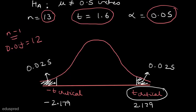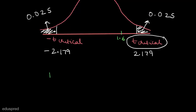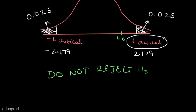We are given that t is equal to 1.6, so t equal to 1.6 will be somewhere in the middle — it does not lie in the rejection region. Consequently, we do not reject the null hypothesis. The conclusion is: do not reject H0 at the 5% level of significance. That means we can conclude that the true average diameter of ball bearings is 0.5 inches.